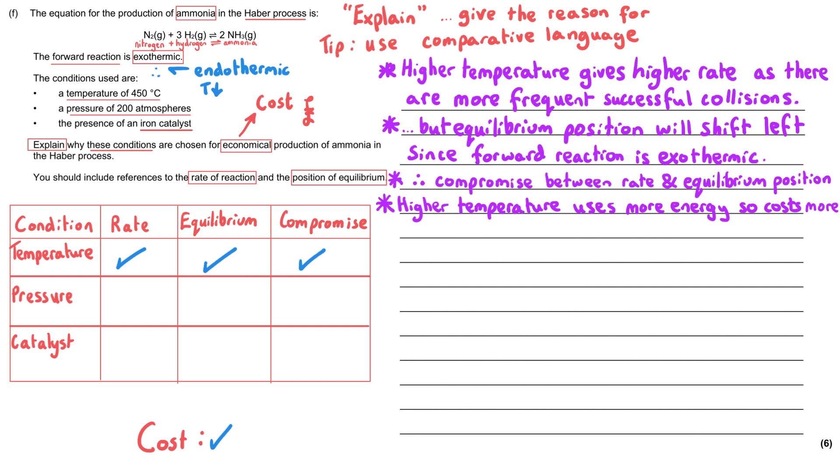Let's move on to pressure. A higher pressure will give a higher rate of reaction because there will be more frequent successful collisions. This is the same concept as the temperature.